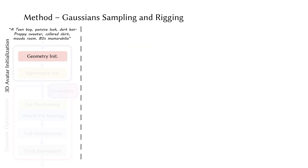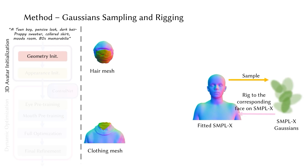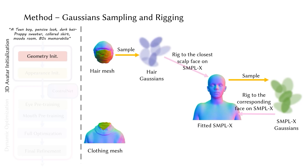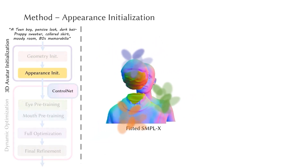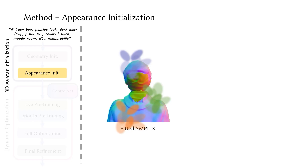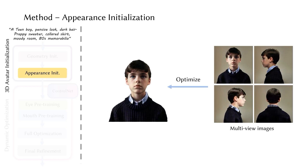Given the fitted SMPLX model and the asset meshes, we first sample points from the SMPLX model and rig them to their corresponding SMPLX faces. For points sampled from the hair mesh, we locate the nearest face on the scalp partition of the SMPLX model and rig them to the closest scalp face. Similarly, for points sampled from the clothing mesh, we identify the nearest face on the body and rig them accordingly. Next, we initialize an initial 3DGS avatar using this sampled point cloud and train it with the multi-view rendered images.